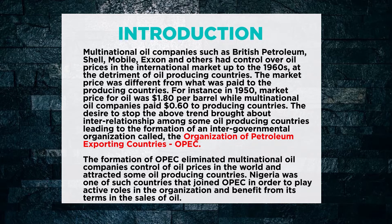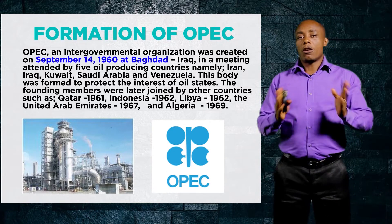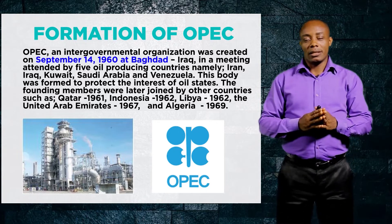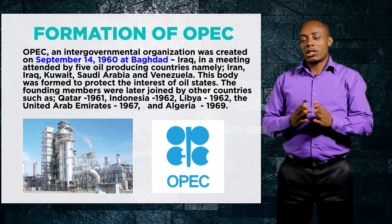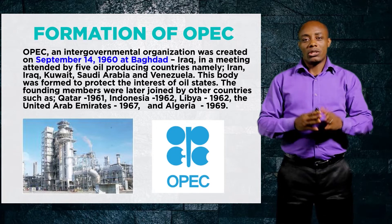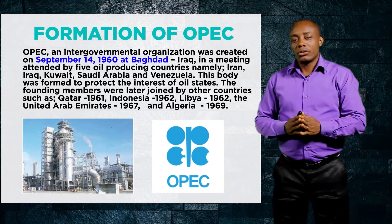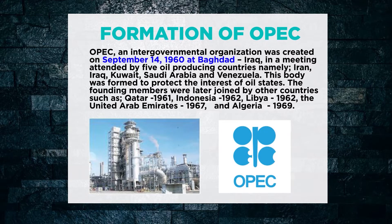OPEC is an intergovernmental organization. The governments of the founding countries came together on September 14, 1960, in Baghdad, Iraq, where they discussed the issue of multinational oil companies controlling oil prices and agreed to form an organization to control the sales and prices of oil. This meeting was attended by five founding member countries: Iran, Iraq, Kuwait, Saudi Arabia, and Venezuela.